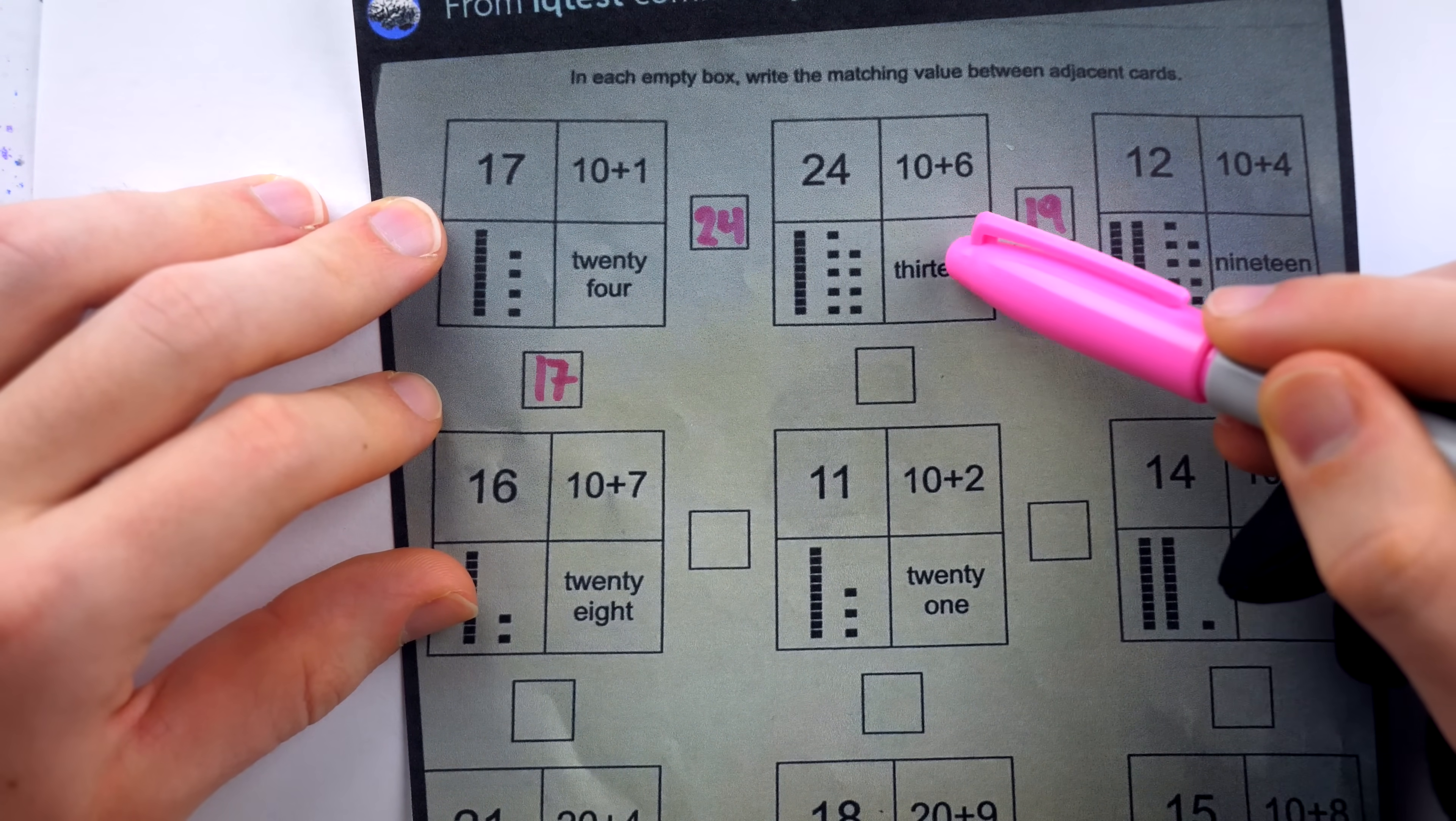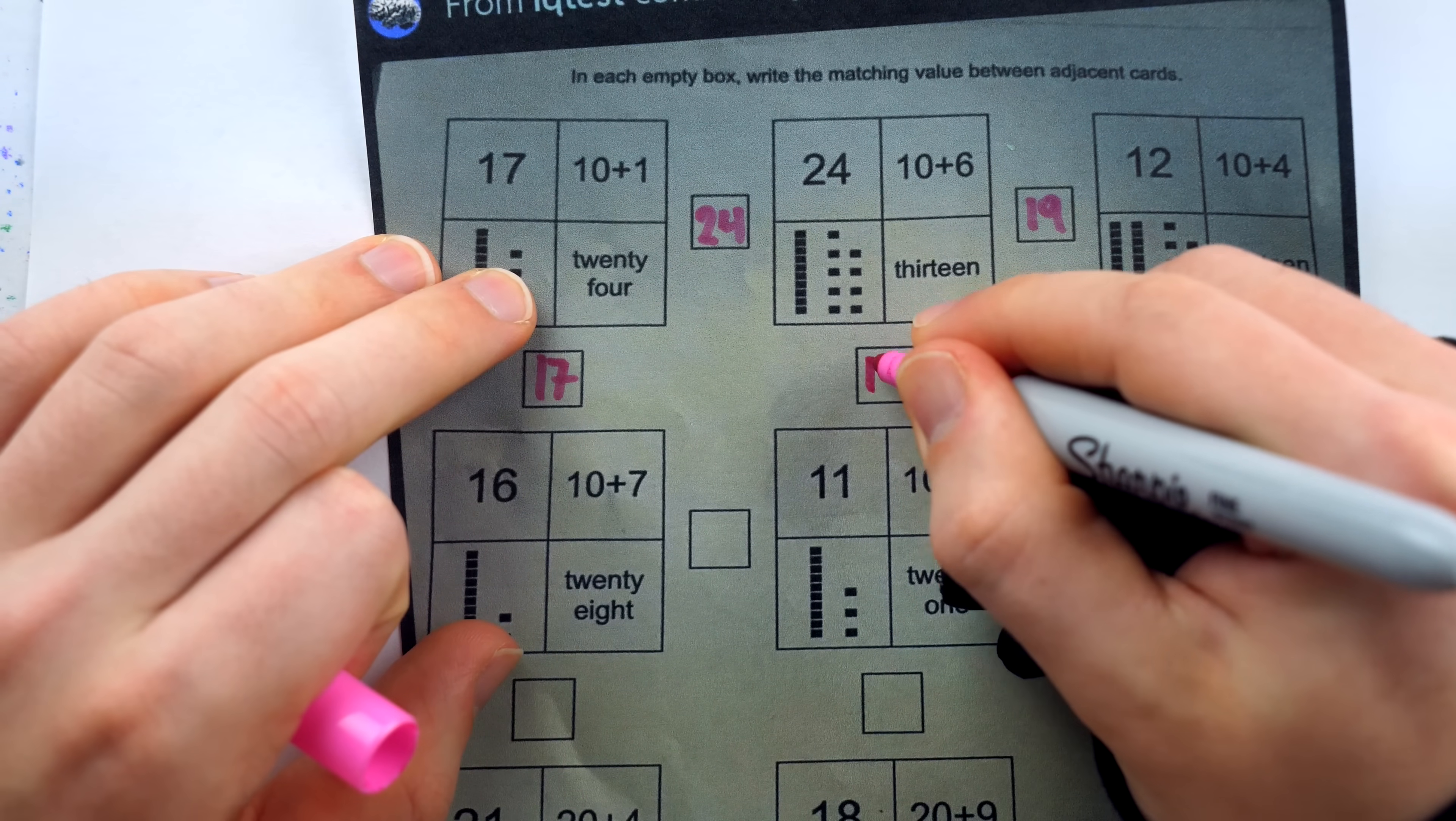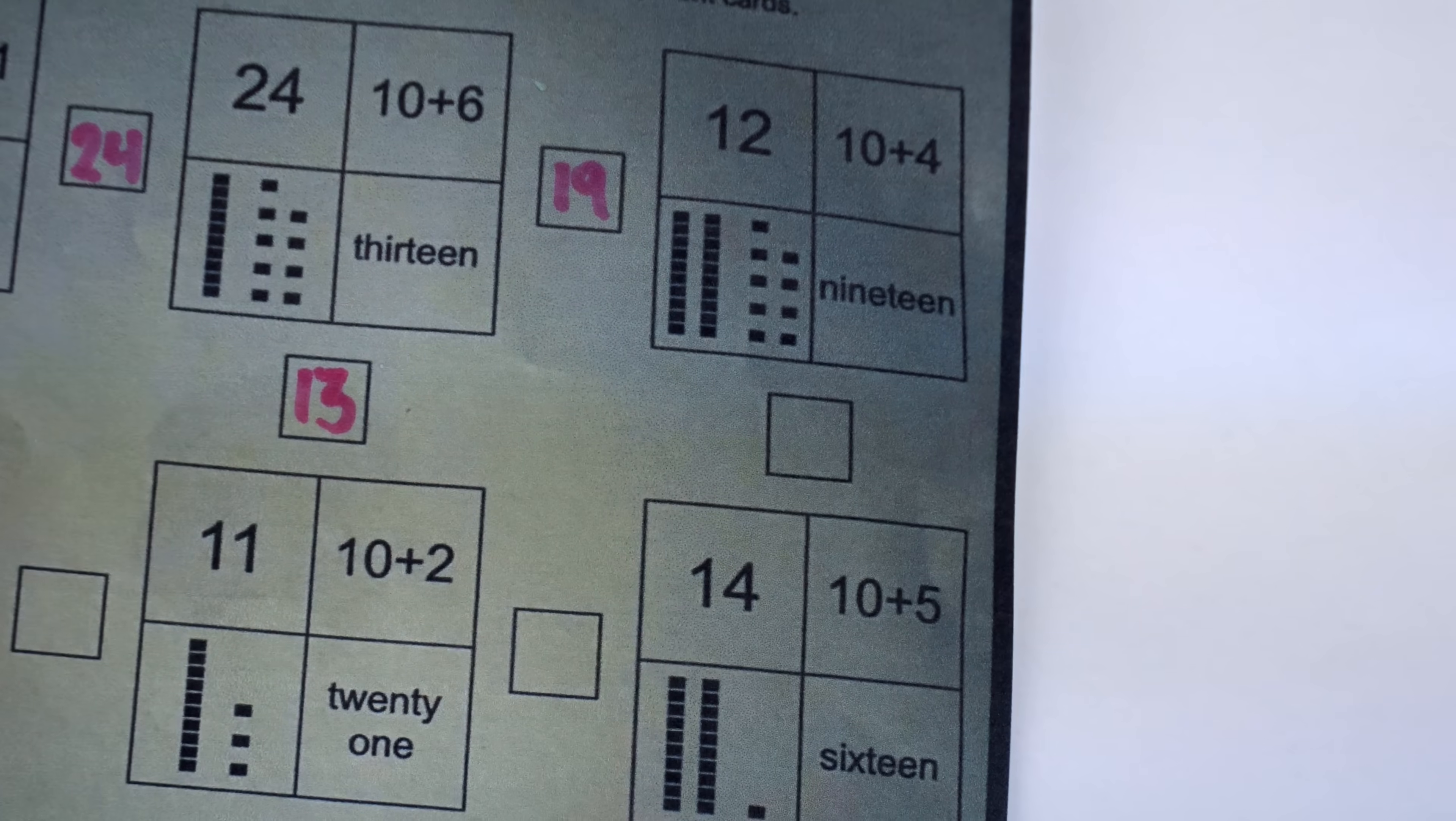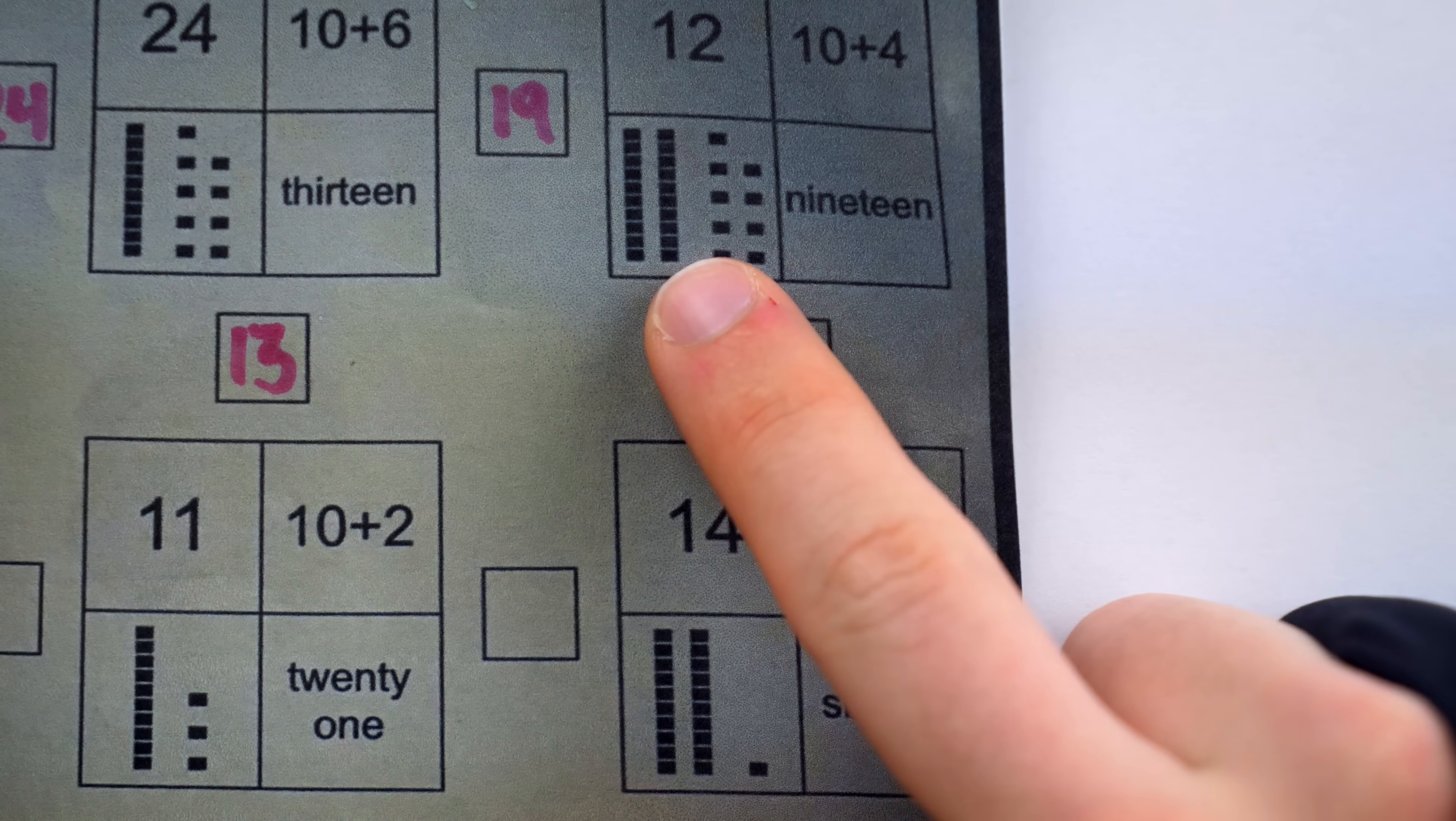Moving on to these two boxes, we see 13 and 13 there with the base 10 blocks. So that's the number shared here. Moving on to this next one. Let's see. What do we have? 14, 12, that looks like 29, 15, 16.